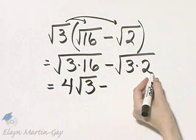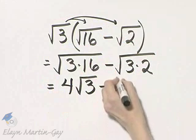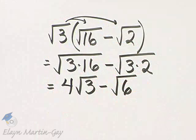there's no perfect square factors here, and 3 times 2 is 6, so this is minus square root of 6.